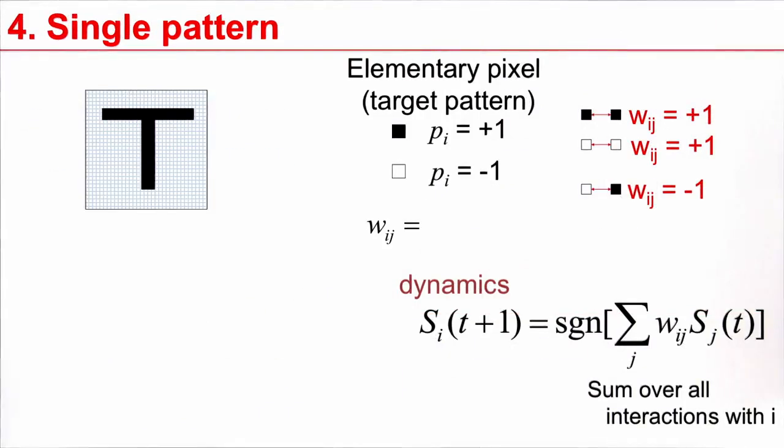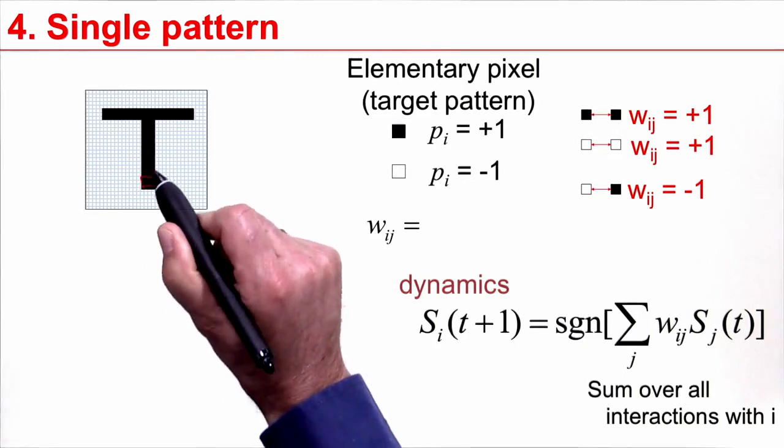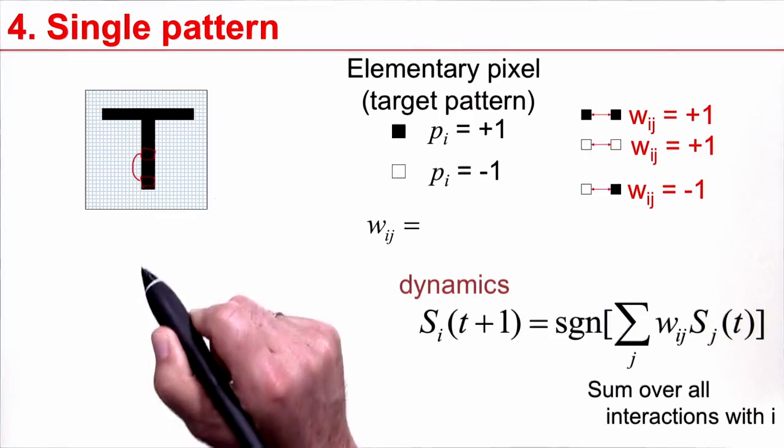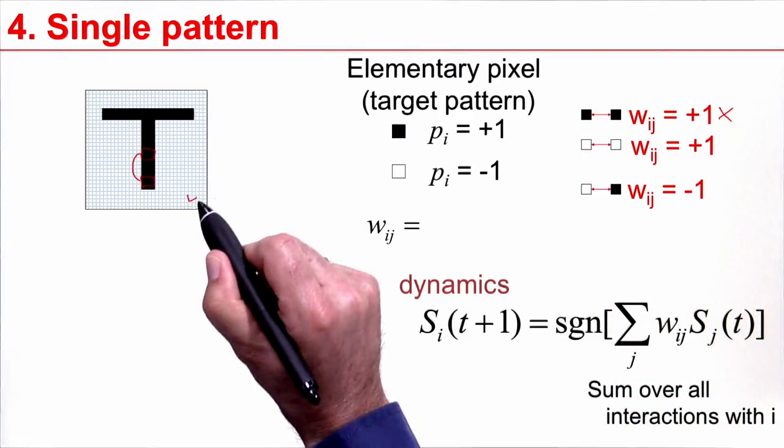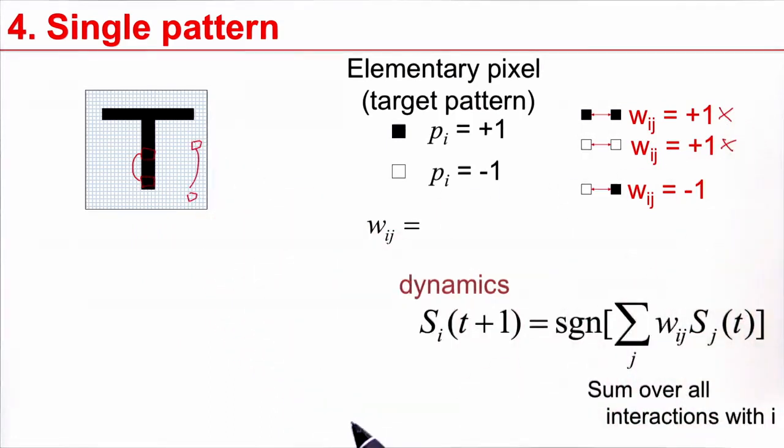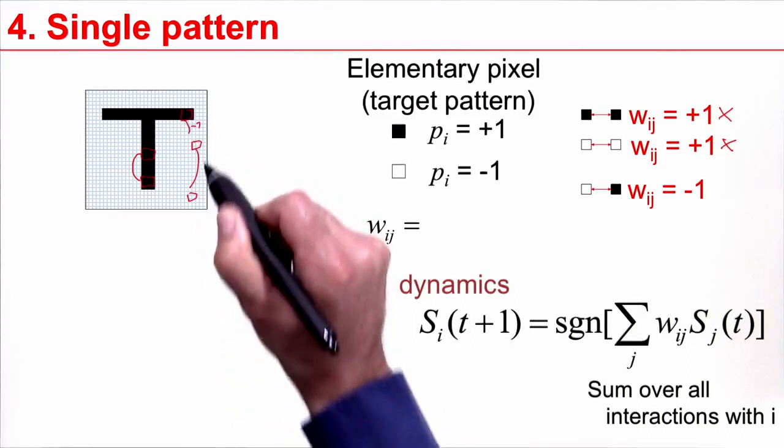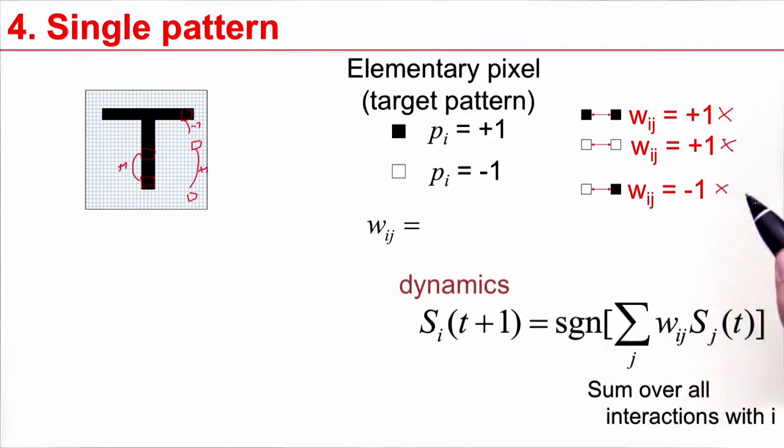We said that in order to store a specific pattern, just one pattern, you would like to connect a black pixel that has a connection to another black pixel with a plus one weight, a white pixel with a white pixel with a plus one weight, and a black pixel with a white pixel with a minus one weight. These are the three rules.